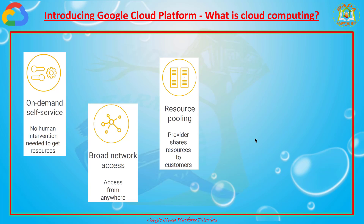The third one is resource pooling. The provider shares resources to the customers. This allows the provider to get economies of scale by buying in bulk and passing the savings on to the customers. The customer doesn't have to know or care about the exact physical location of these resources. You can just go with a simple UI, select what you need, and get it automatically.